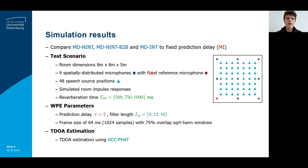In the following scenario, I will now compare the three proposed microphone-dependent prediction delay schemes to a fixed prediction delay. The simulated scenario consists of a room of dimensions 8 by 8 by 5 meters, with 9 spatially distributed microphones indicated by a blue circle, with a fixed reference microphone indicated by a red circle. In total, 48 source positions are considered, indicated by a blue triangle, with simulated room impulse responses generated by the randomized image method using three reverberation times. WPE was implemented with prediction delay parameter tau equal to 2, and filter length LG equal to 8, 12, and 16, proportional to the reverberation time. A frame size of 64 milliseconds was used with 75% overlapping square root-Hann windows.